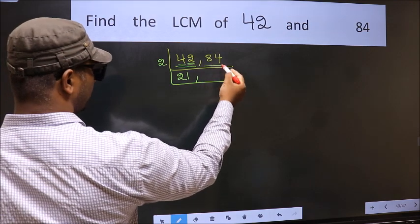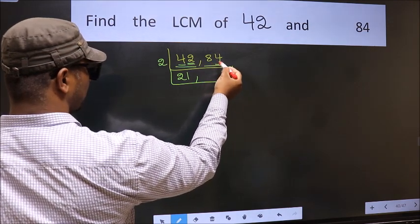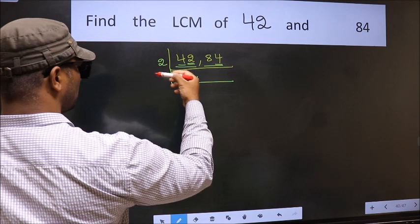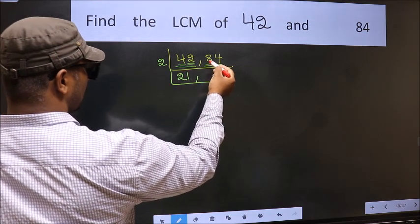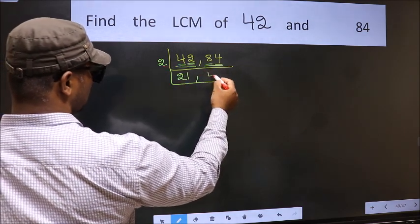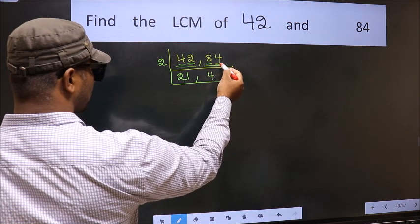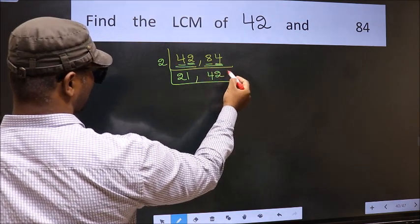Now the other number 84, last digit 4, even, so this is divisible by 2. First number 8, when do we get 8 in 2 table? 2 times 4 is 8. The other number 4, when do we get 4 in 2 table? 2 times 2 is 4.